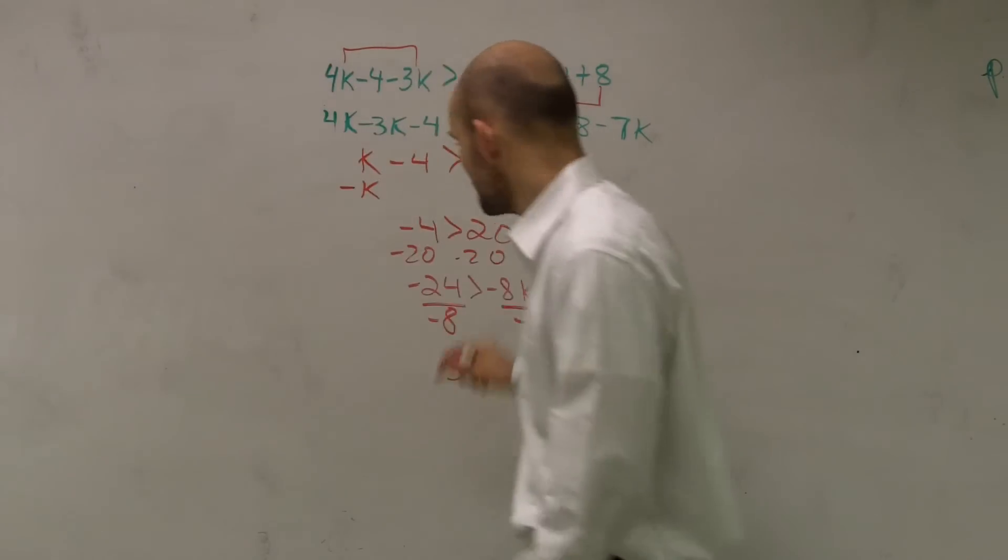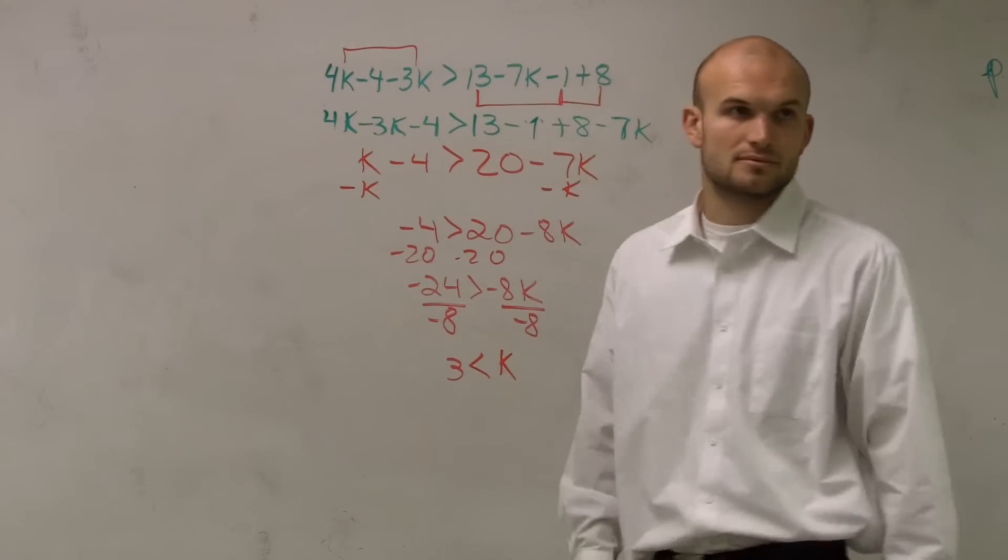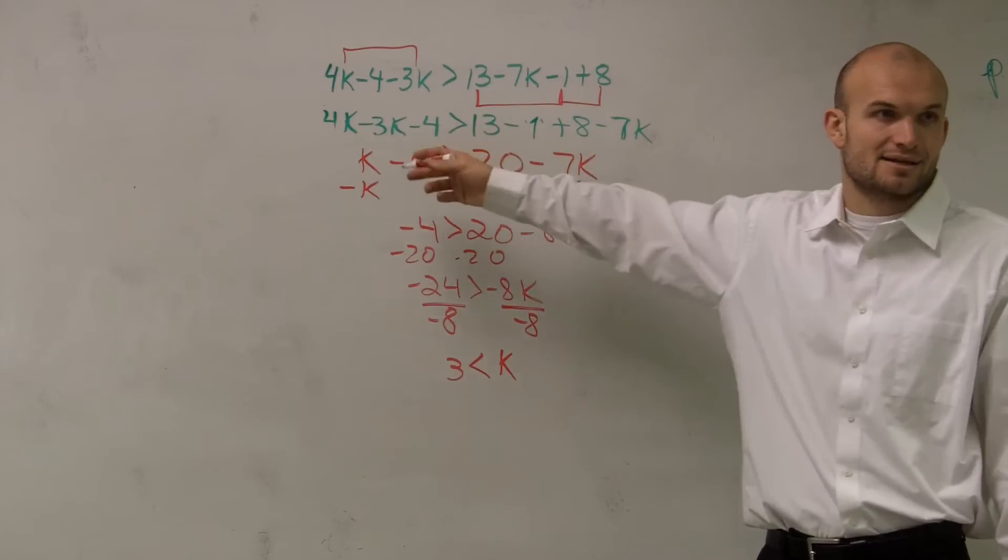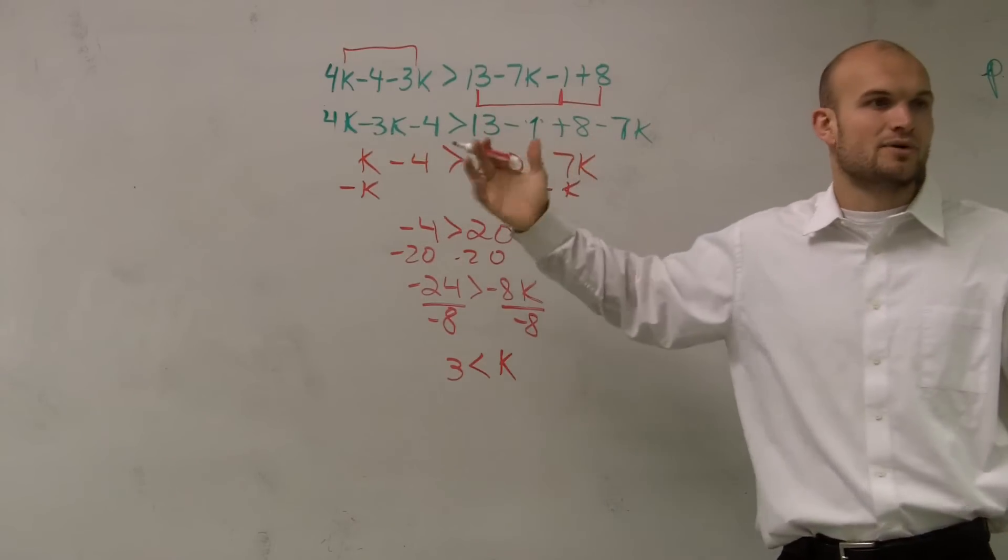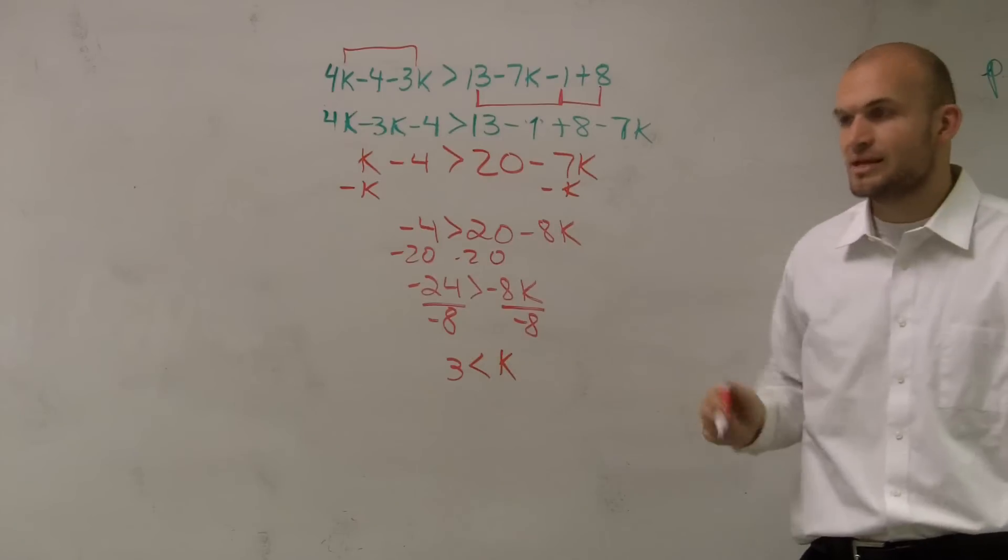So, now, it's going to be a positive 3 is less than K. Did you ever say that? So, the only reason why I said, you know, I would have preferred to add the 8 or add the 7K, because then I just wouldn't have had to go through dividing by a negative number. It doesn't matter. You just need to remember that step.